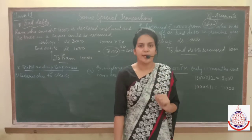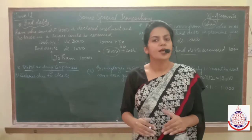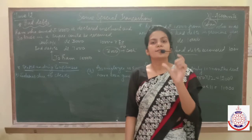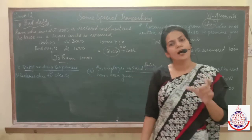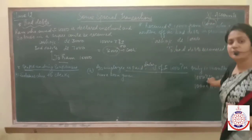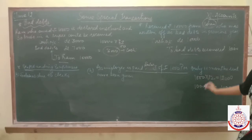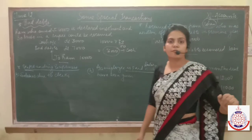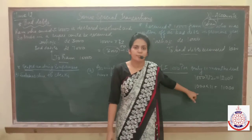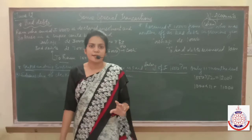It means 1 month's salary of this financial year we have not paid to this employee. So this 1 month's salary becomes outstanding. Total 12 months we generally pay; in this financial year we paid only 11 months, meaning 1 month's salary is still outstanding.